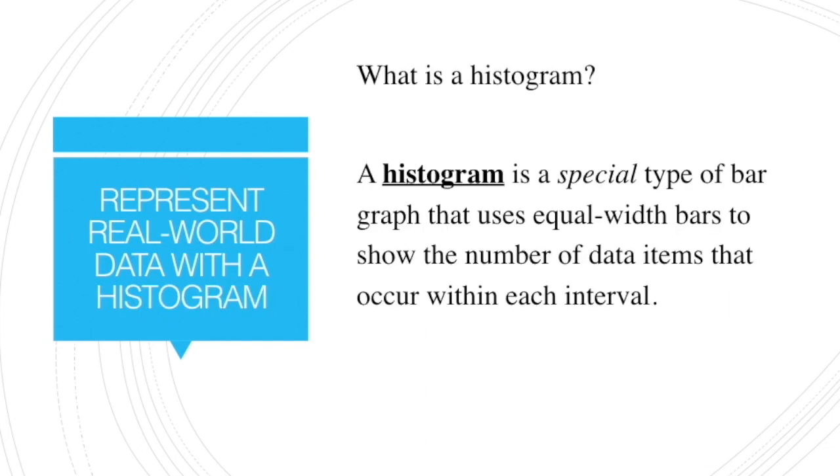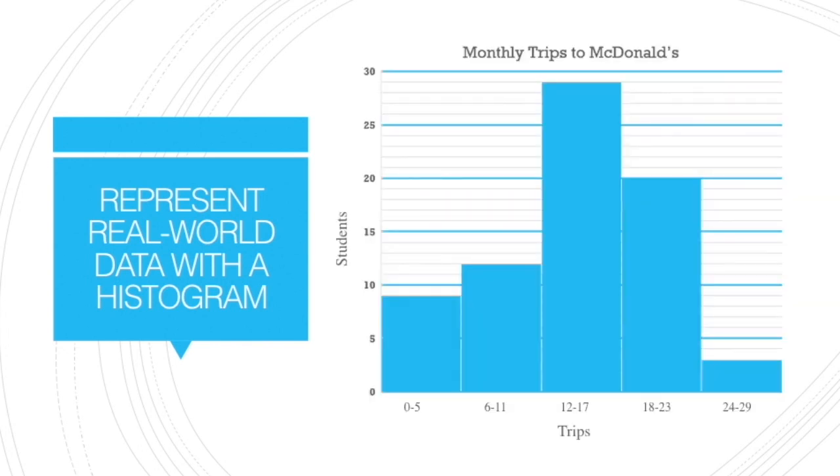Now, what about a histogram? Well, a histogram is a special type of bar graph that uses equal width bars to show the number of data items that occur within each interval. So what makes this special? Well, first of all, because the bars are all together. There's no space in between them, unlike a bar graph. Notice also here that we have intervals. That means when we have our values on the x-axis or the horizontal axis, they're going to be grouped together. Here's an example.